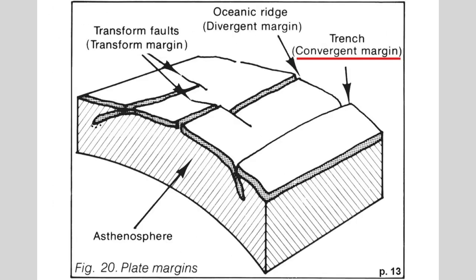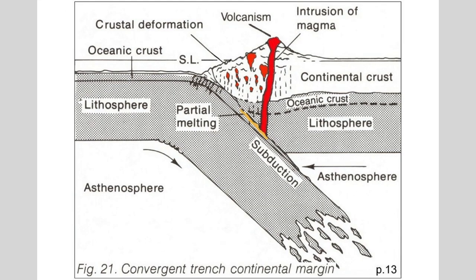Then we have the convergent margin where things are coming together. One plate is forced under the other one, and as it goes deeper and deeper into the subsurface, it breaks up. The plate on top is now sitting over the one being forced under. Things are getting hotter as you go deeper, and as a result you get melting in that area and volcanism, which brings volcanic material to the surface. That's why the whole western side of South America has volcanic activity — it's related to this subduction process.